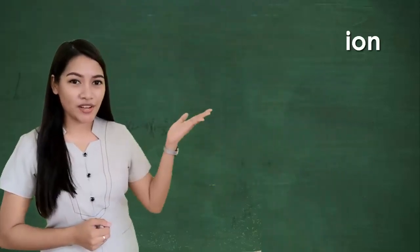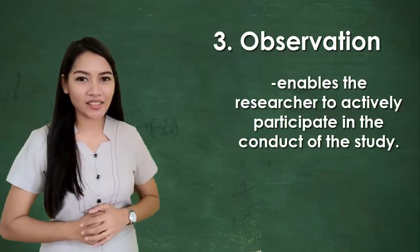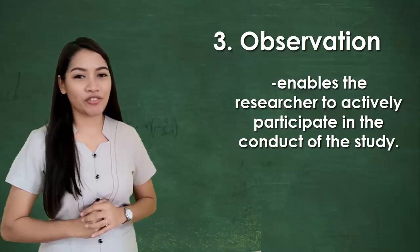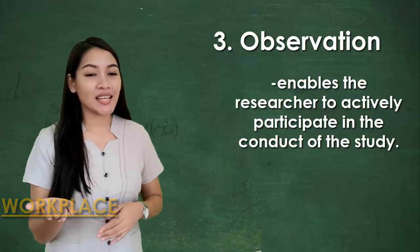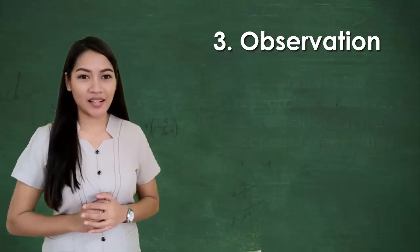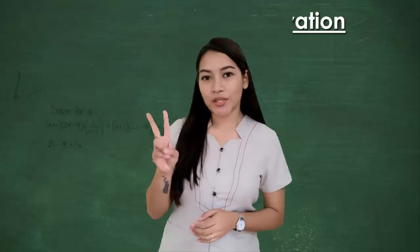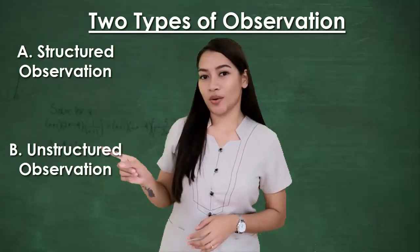Next is observation. This technique enables you as a researcher to actively participate in the conduct of the study. This typically happens in your home, workplace, or natural environment, not in a lab or controlled setting. There are two types of observation: structured and unstructured.